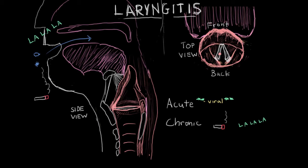There might be a nodule, or if the patient has signs of acid reflux, there might be damage to the soft tissue of the larynx. Direct visualization can also help diagnose bacterial laryngitis, as it could reveal exudate — white, pus-like fluid created by bacteria — which would indicate a bacterial infection.